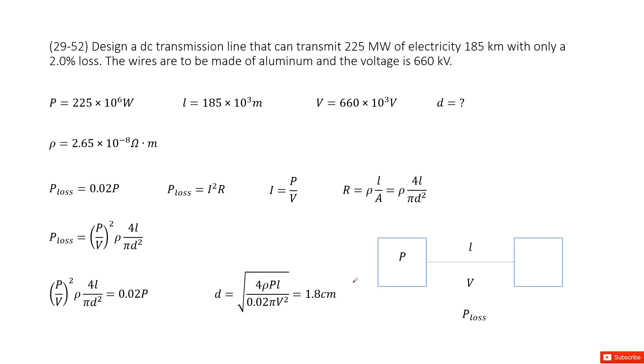So we look at this system. This is a power transmission. Power generator will generate the power with P as this number, so 225MW is the power from generator.